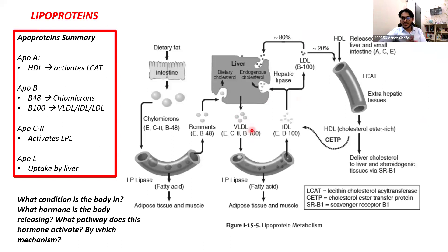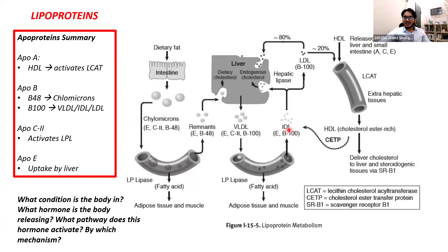VLDL, like chylomicrons, gets ApoE and ApoC2 from HDL. ApoC2 activates LPL. VLDL starts giving off triglycerides to adipose tissue and muscle because of LPL. The VLDL then shrinks — it forms an IDL. It gives ApoC2 back to HDL. IDL has two options: by ApoE it can get taken up by the liver — end of story — or it can run into hepatic lipase, which results in IDL giving off more triglycerides. Now the majority of IDL is composed of cholesterol. IDL can give ApoE back to HDL. IDL with only B100 is called LDL.